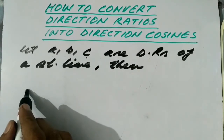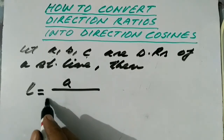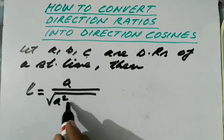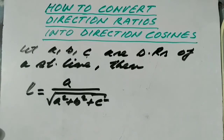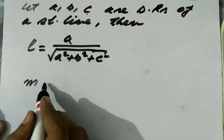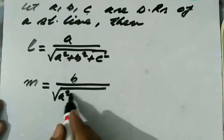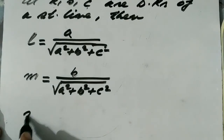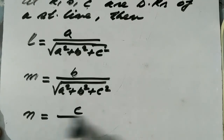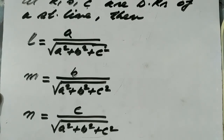So if L, M, N are the direction cosines, then L = A / √(A² + B² + C²), M = B / √(A² + B² + C²), and N = C / √(A² + B² + C²). This is how we convert direction ratios into direction cosines.